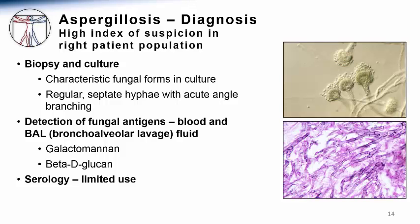Fungal serologies have limited use in diagnosing an acute infection. Seen on the right of the slide are fungal features that will alert the clinician to the presence of Aspergillus. On the top panel is the presence of Aspergillus conidia that will be seen when the fungus actually grows in culture. In the bottom panel is a histopathology section of tissue with the typical form of Aspergillus, showing fungal hyphae with regular dividers, or septa, along the hyphal length, as well as acute angle branching of the fungal hyphae.